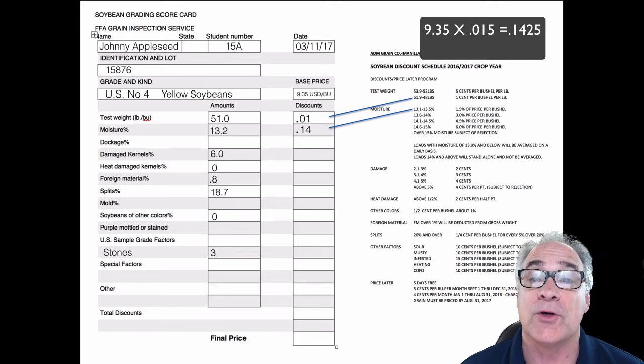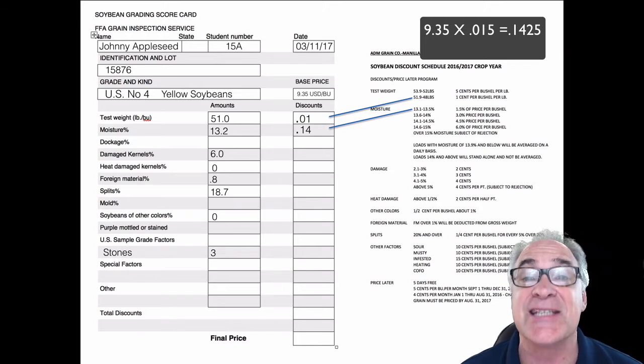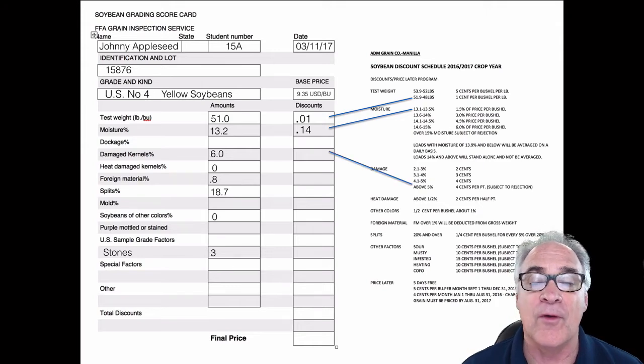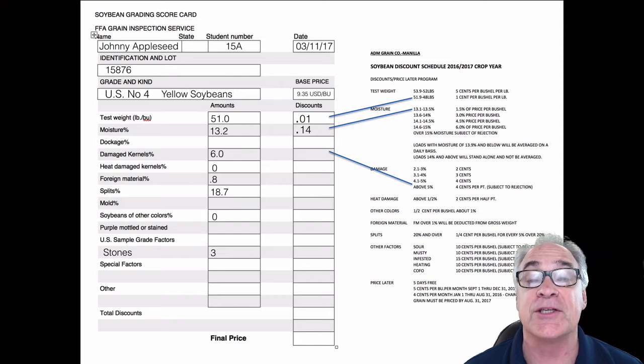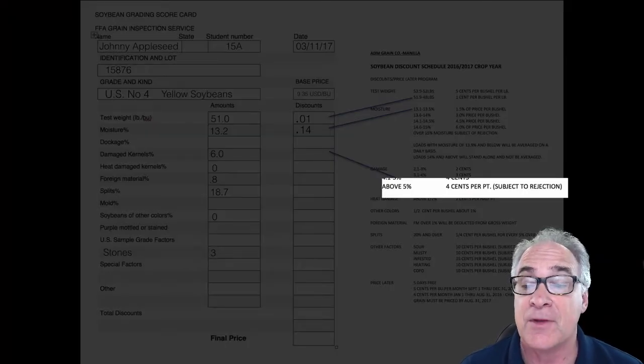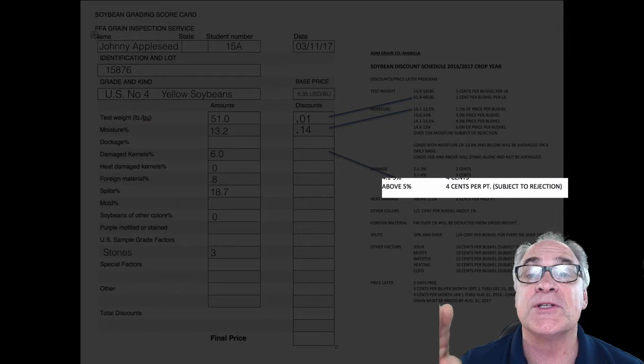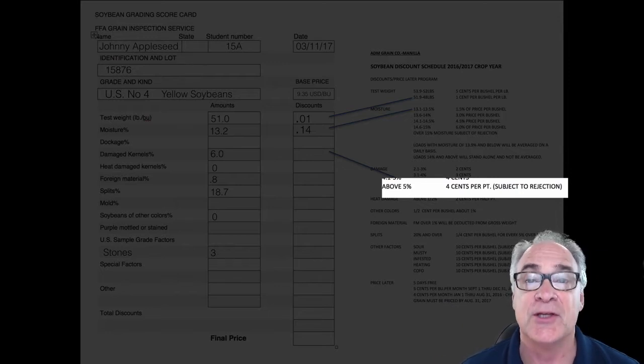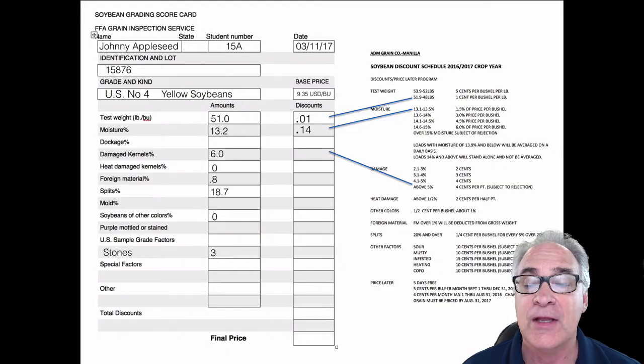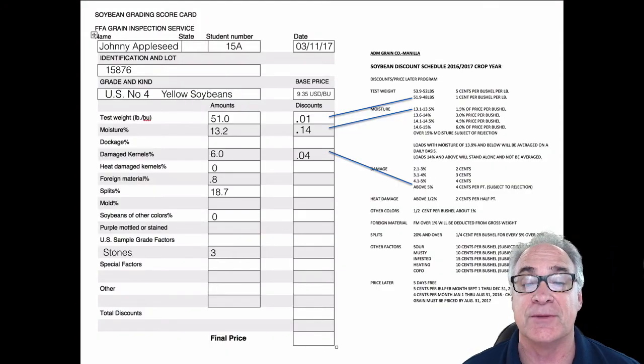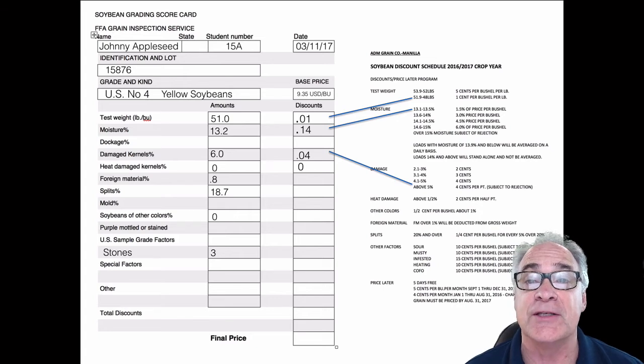We're going to move over to our damaged kernels. We're at 6 percent. Now notice it says above 5 percent, and we're at that, it's four cents per percentage. The PT means percentage. So we're one point over, or one percentage point over five, which means we have a four cent deduction.